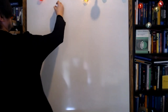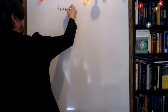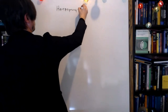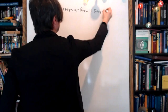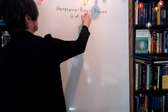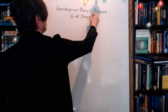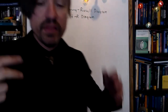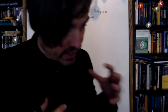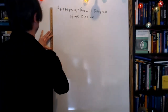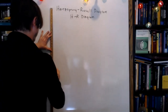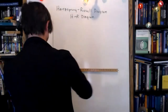Introducing the HR diagram — the Hertzsprung-Russell diagram, although astronomers call it the HR diagram for short. The HR diagram is probably the single most important graph in all of astronomy, and you guys need to memorize it well for your exam. We have a vertical and a horizontal axis.